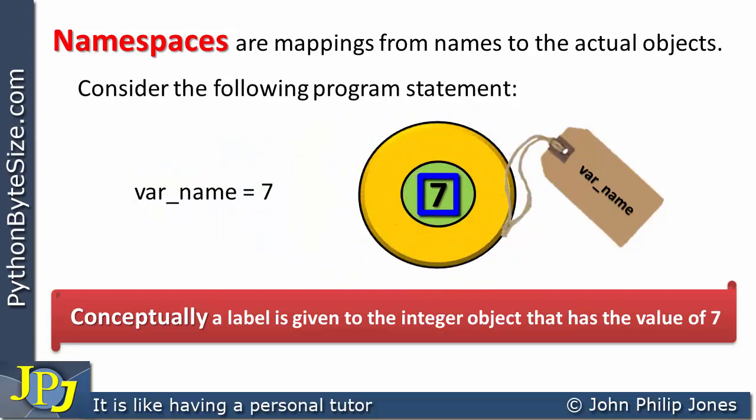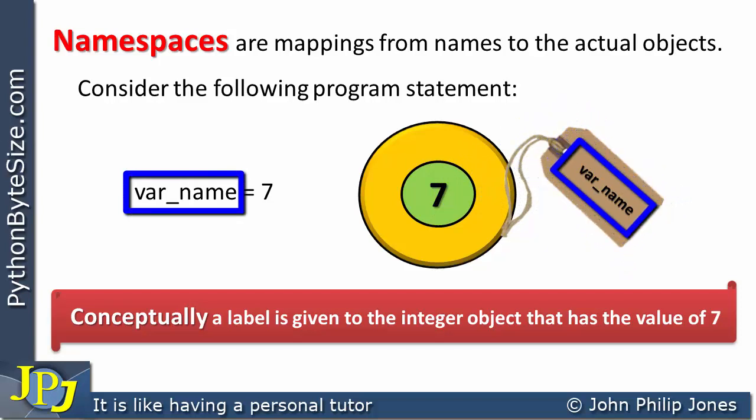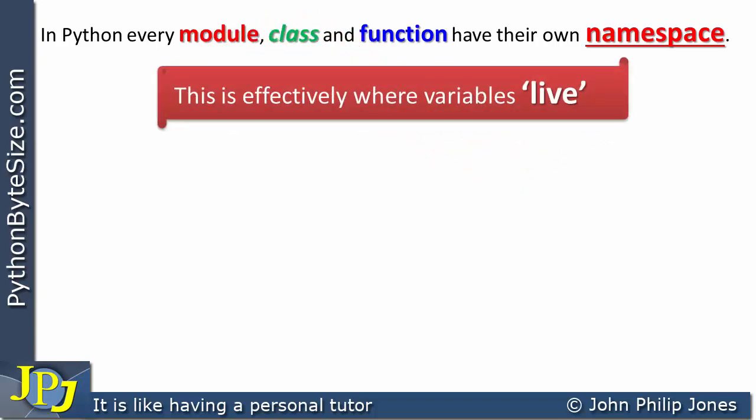This program statement ends up being an integer object with the value of 7 labeled by the identifier var_name, as shown in the schematic representation. In Python, every module, class, and function has its own namespace — effectively where variables live. You can think of it as an area where all the labels that point to everything in our Python program live. A function is an object, in the same way that a variable is an instance of the integer class.